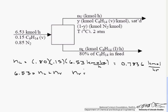6.53 has to equal to N sub L plus N sub V, so N sub V equals 5.746 kmol per hour. The next thing that we have to do is a hexane balance, because what we need to find out is what is this y right here.